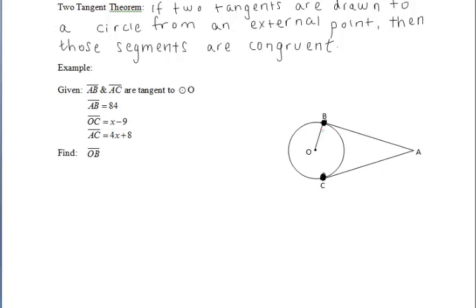So I'm filling in the given information there, and we have our right angles. Now we should notice that segments AB and AC are tangent segments, and they're drawn from this external point A, which means from the two tangent theorem above, the segments are congruent. So we can set 4X plus 8 equal to 84.